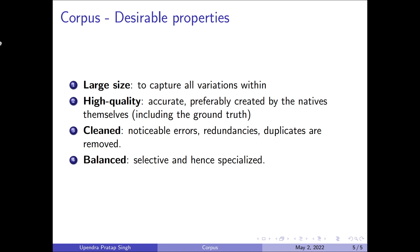This includes the ground truth — meaning the data samples, the text samples, and also the ground truth should be coming from the natives themselves. In that case, the quality of the data and the ground truth will be very high. The corpus should also be clean, meaning any noticeable errors or redundancies in the dataset — such as words or audio clips that are repeated again and again — should be removed.